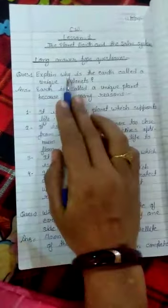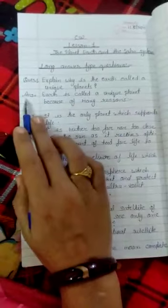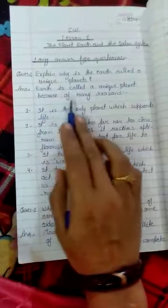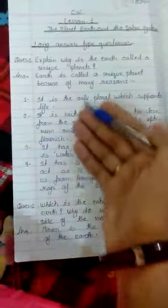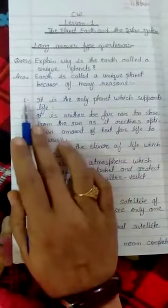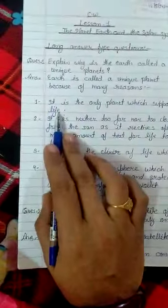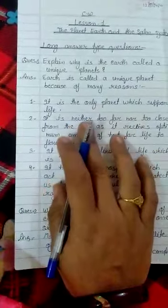Question: Explain why is the earth called a unique planet? Answer: Earth is called a unique planet because of many reasons. You write this answer with point wise. First point: It is the only planet which supports life. Our earth is unique planet because it supports life.